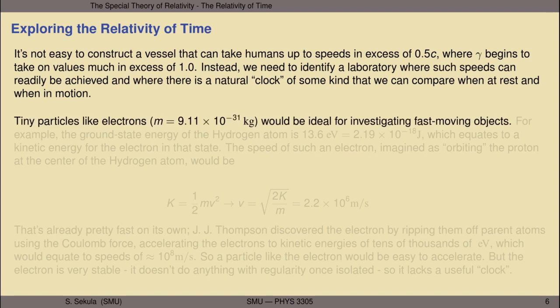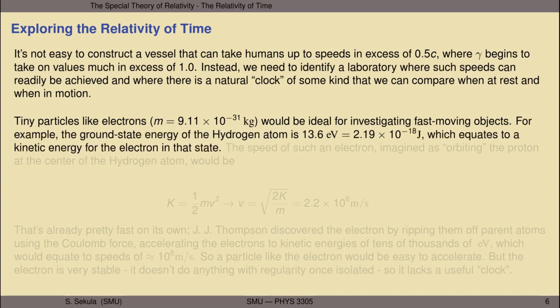Tiny particles would be a great potential laboratory. Tiny particles have very small masses and are very easy to accelerate, so it's possible that something like the electron, with a mass of 9.11 times 10 to the minus 31 kilograms, could be ideal for investigating fast-moving objects and maybe even the relativity of time. For example, the ground state energy of the hydrogen atom—the lowest energy state an electron can have when orbiting a single proton—is 13.6 electron volts.